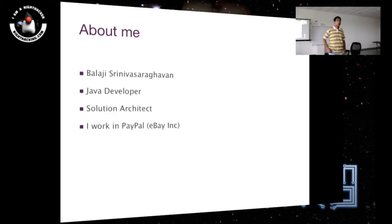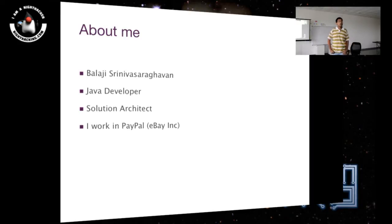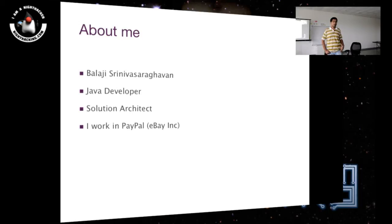We won't cover the entire Hadoop ecosystem today. We want to understand how Hadoop works, and pig and hive are layers on top of that — abstractions over Hadoop. They're pretty easy to grasp once you understand how the underlying system works. Hive is basically SQL, so that's easy enough. Pig is similar to Informatica — it's like an ETL language.